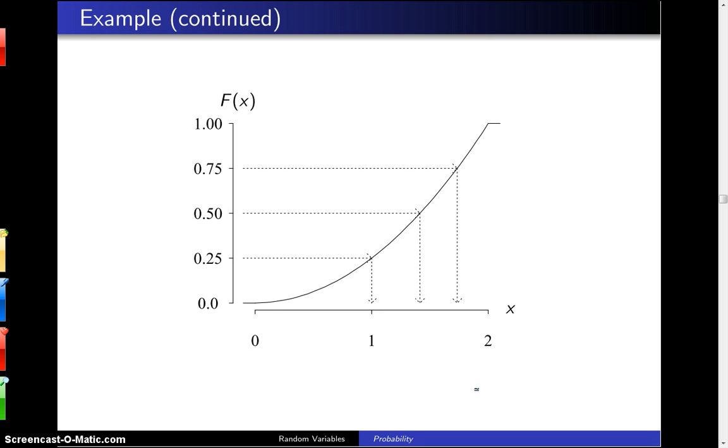To see what's going on here geometrically, you draw the cumulative distribution function and then come across to the vertical axis at 0.25, 0.5, and 0.75. When you go across and invert that, you will get 1 for the 25th percentile, you will get the square root of 2 for the 50th percentile, and you will get the square root of 3 for the 75th percentile.